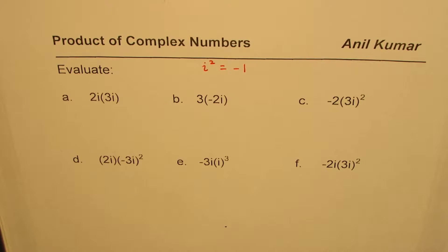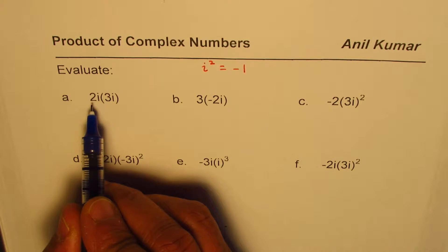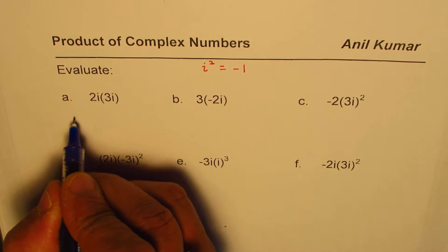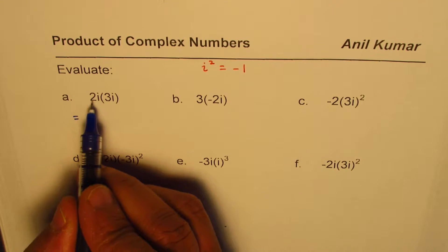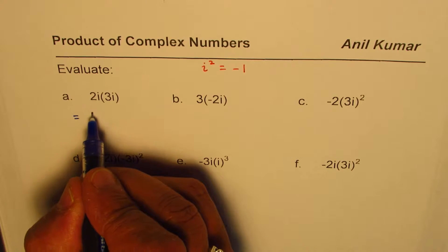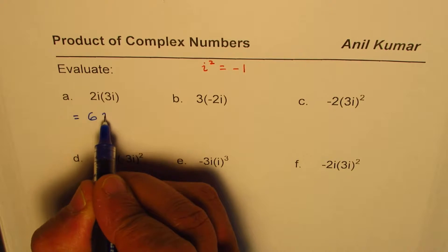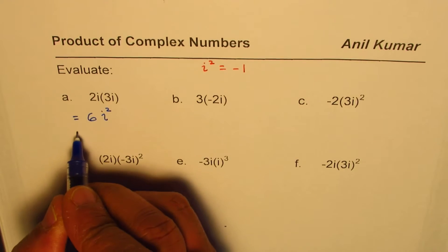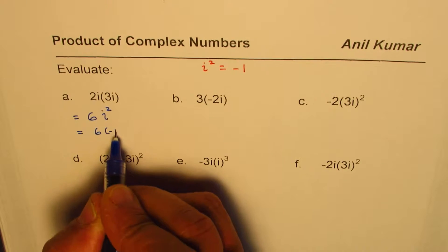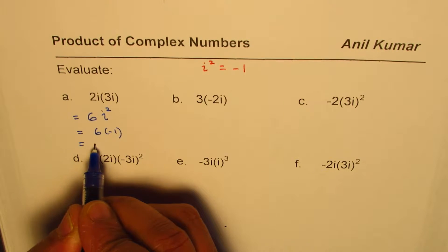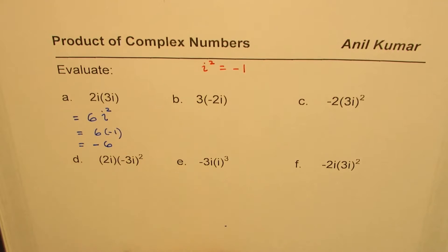You can pause the video, answer the question, and then look into my suggestions. So we have 2i times 3i. Let's begin with the very first one. You multiply the numbers: 2 times 3 is 6, i times i is i². We know i² is -1, so it is 6 times -1, which equals -6.